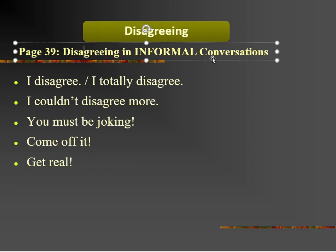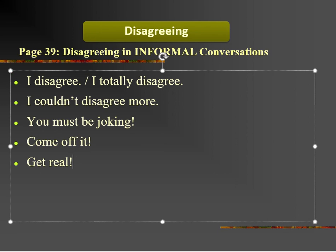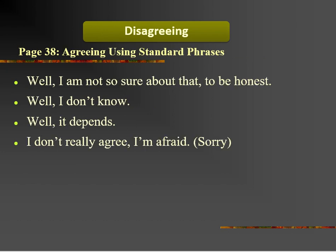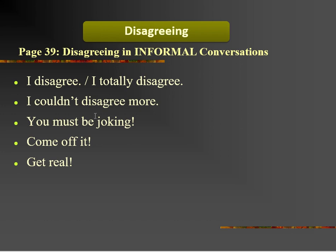Disagreeing in informal conversations — بتكلم مع أصحابك بشكل مباشر بدون مجاملات: I disagree أو I totally disagree — بختلف معك تماماً. I couldn't disagree more — وصلت لقمة الاختلاف. You must be joking — أنت أكيد بتهرج. Come off it — أنت بتهذر. Get real — خليك حقيقي. بكده نكون خلصنا الدرس — عرفنا how to agree باستخدام standard phrases وsynonyms، وعرفنا how to disagree باستخدام standard phrases وinformal expressions. Thank you so much, and that's the end of this lecture.